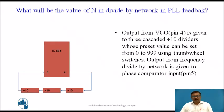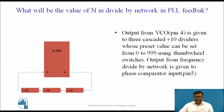Here we will look at the value of N in the divide-by-N network in the PLL feedback loop. The VCO output at pin number 4 is given to the divide-by-N network. Three decade dividers constitute the divide-by-N network, and the output of this network is given to another input of the phase detector. So what will be the value of N in the divide-by-N network in the PLL feedback?